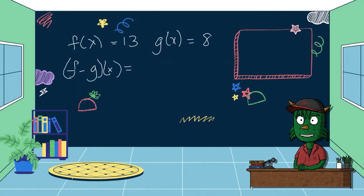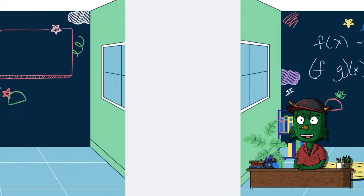If we look at the next one, it's the same thing. This one's with subtraction. So I have f(x) minus g(x). So I have 13 minus 8, which is 5. So we're just substituting the things in for the f(x) and the g(x).